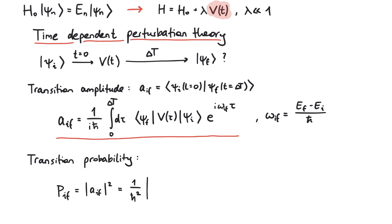So this is now the probability that a potential v of t switches our initial state psi i to a certain final state psi f within a time interval delta t.